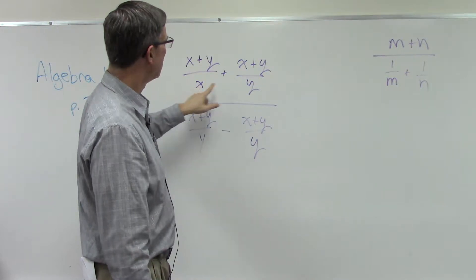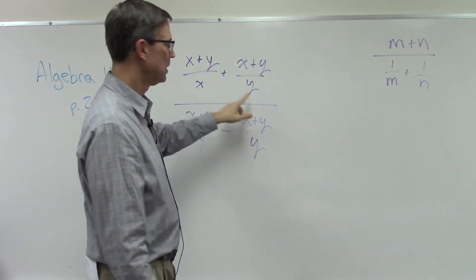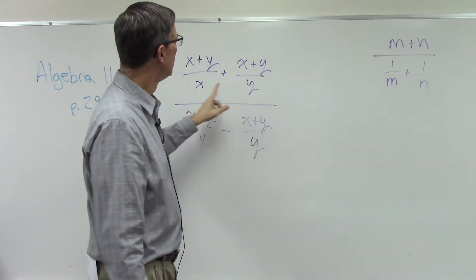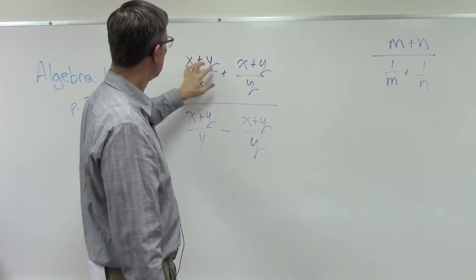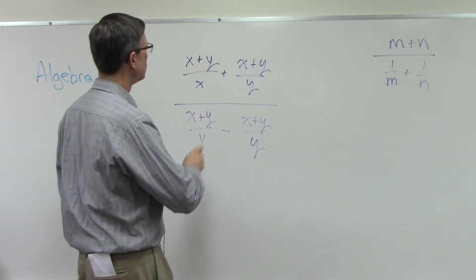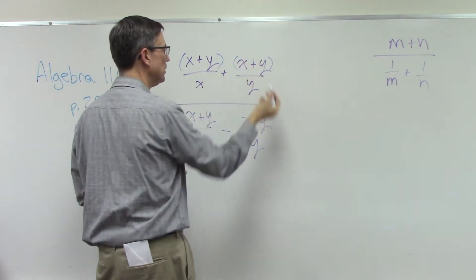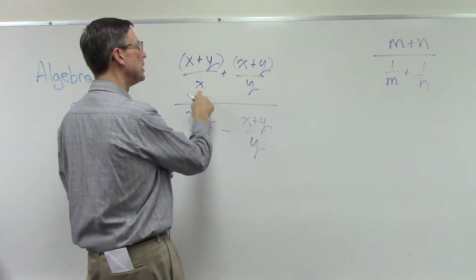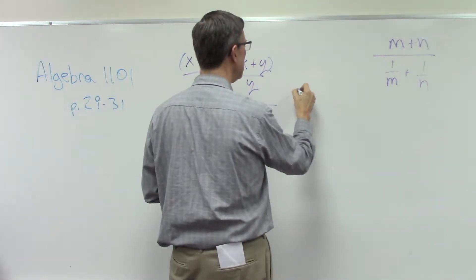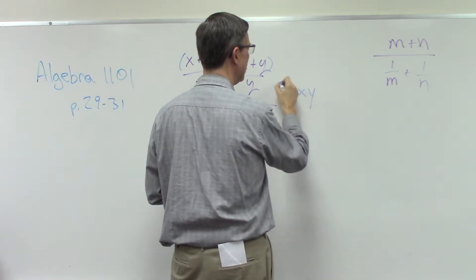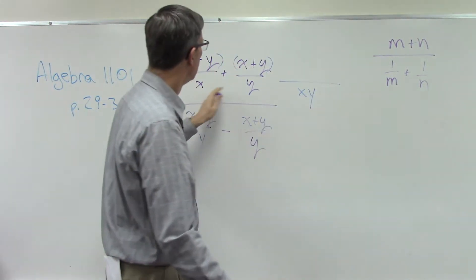But notice my two denominators are x and y. Now this is a protected quantity. It's like x plus y in parentheses, and here it's x plus y in parentheses. So the common denominator is going to be xy.